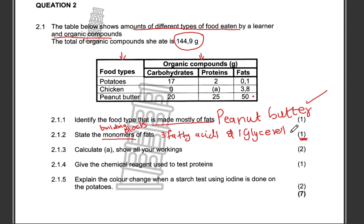For two marks you need to calculate A. So A is basically the protein that we find in chicken for our particular example. We need to find the protein grams for chicken and we need to show all our calculations.